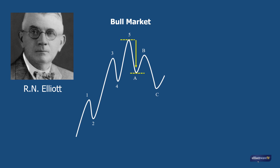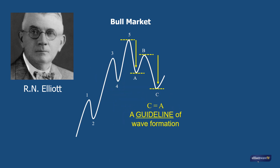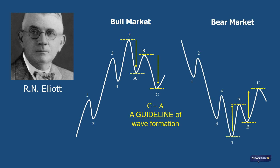But Elliott also noted that certain relationships between the waves often exist, one of which is that a correction against the larger trend — labelled ABC — sometimes ends when wave C equals the length of wave A. He called this a guideline of wave formation, meaning that it can give a clue to the analyst when identifying the overall wave structure. The same is true for bear market corrections: C waves sometimes equal the length of A waves.